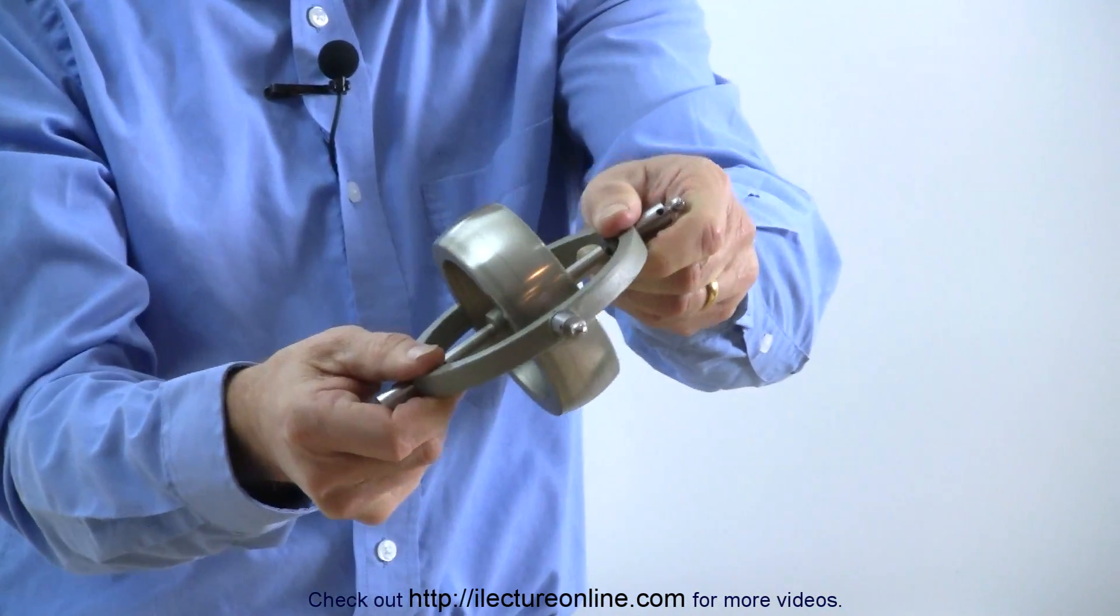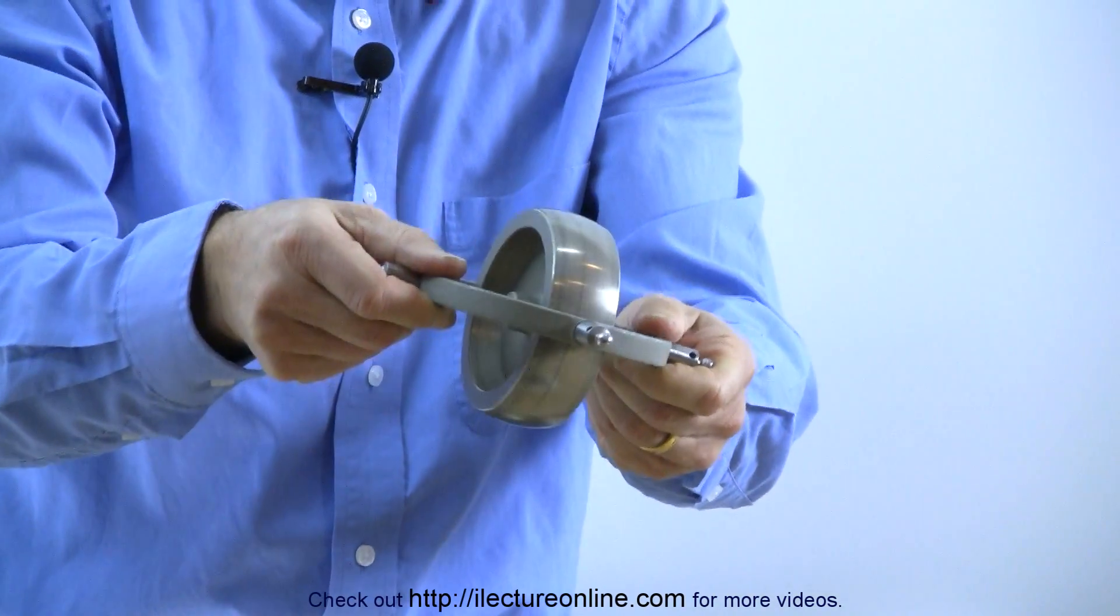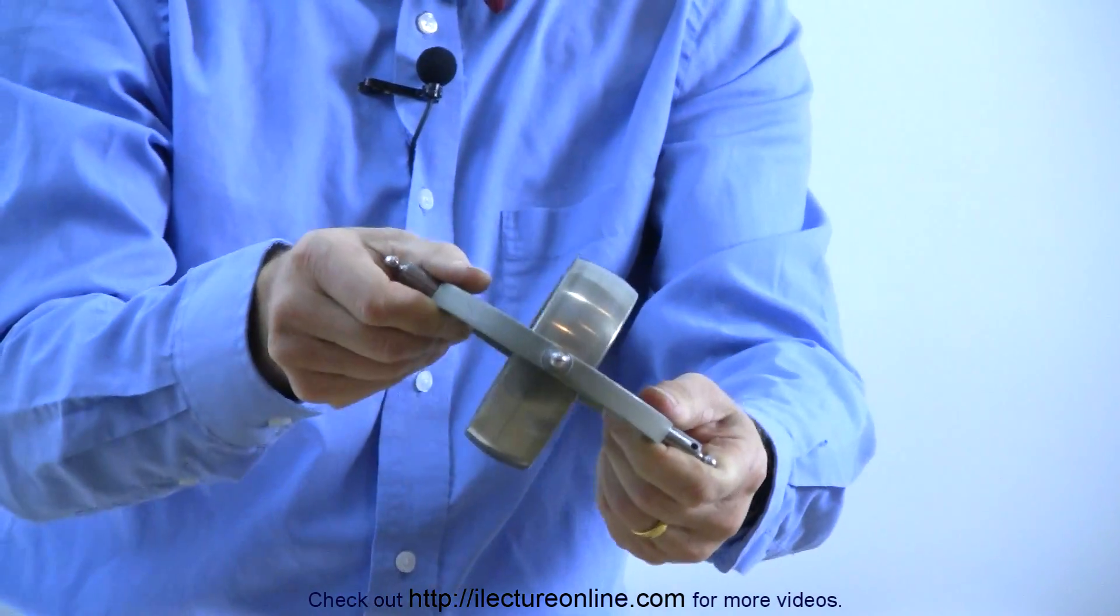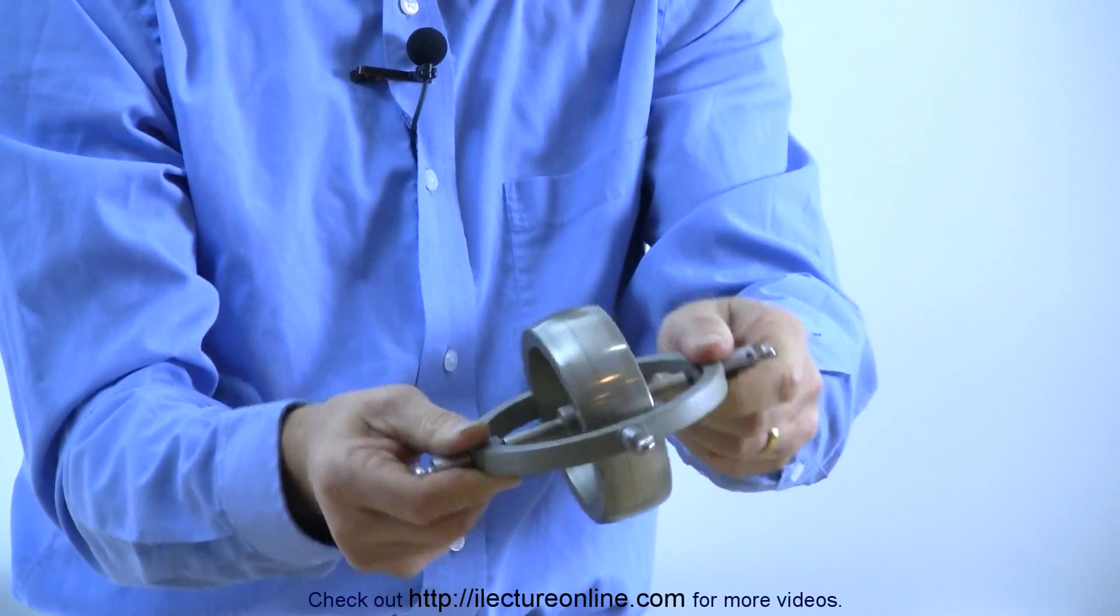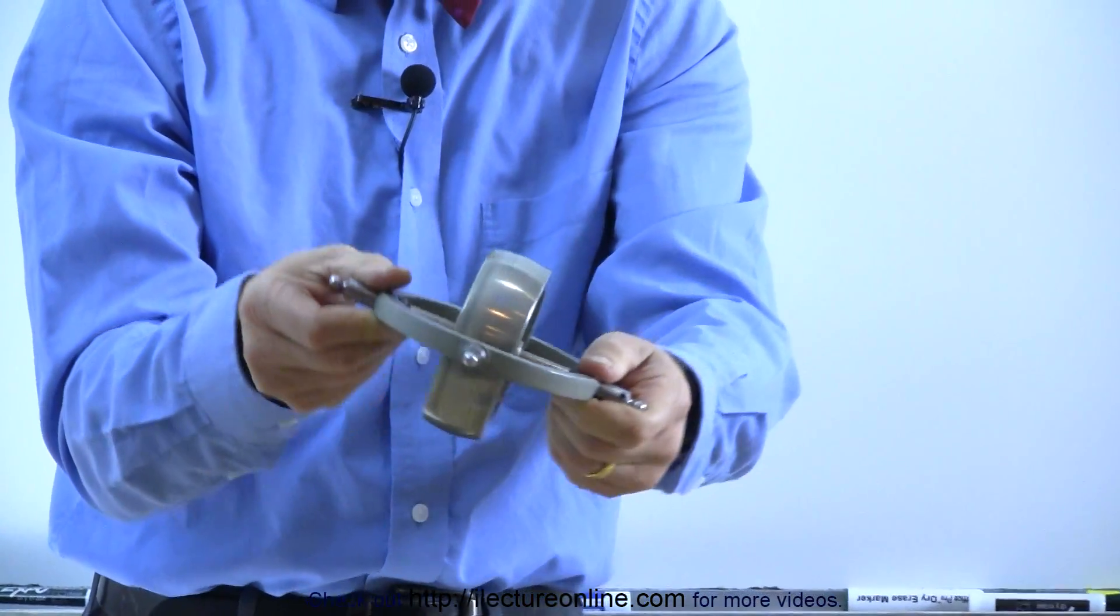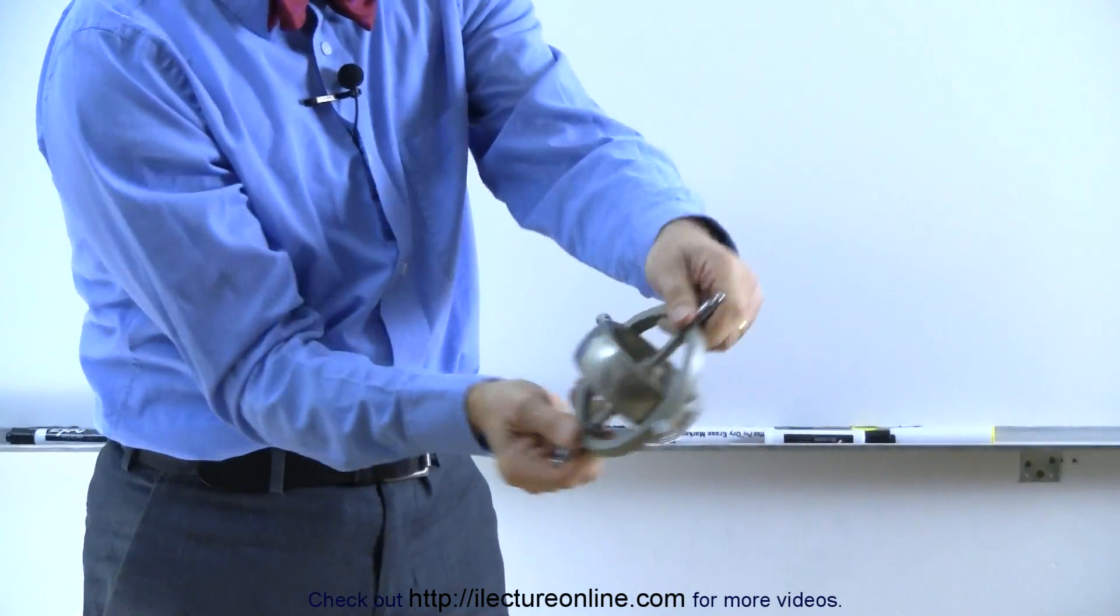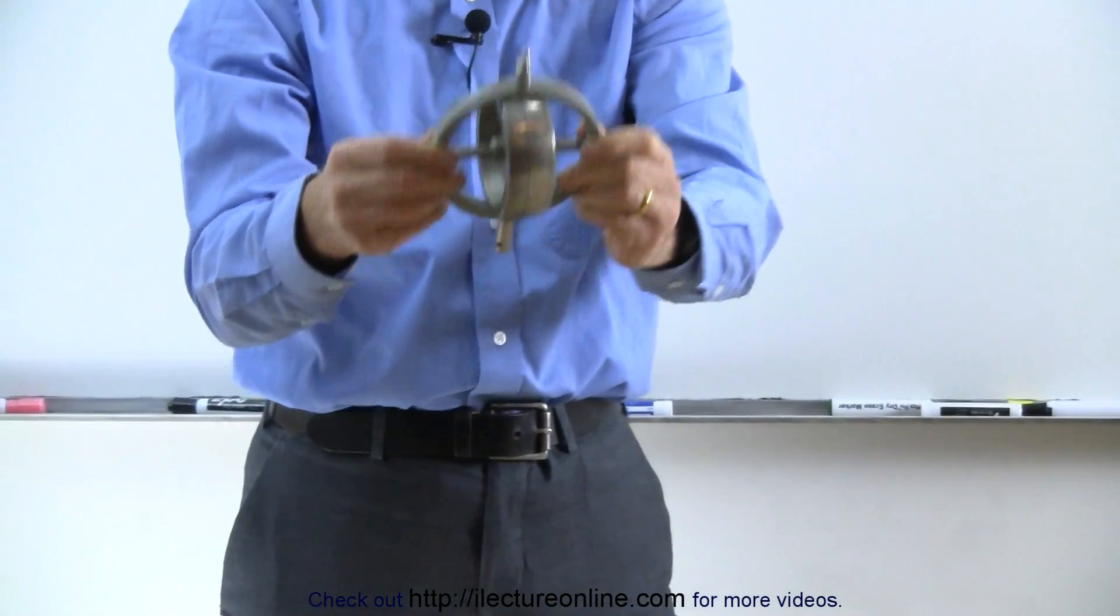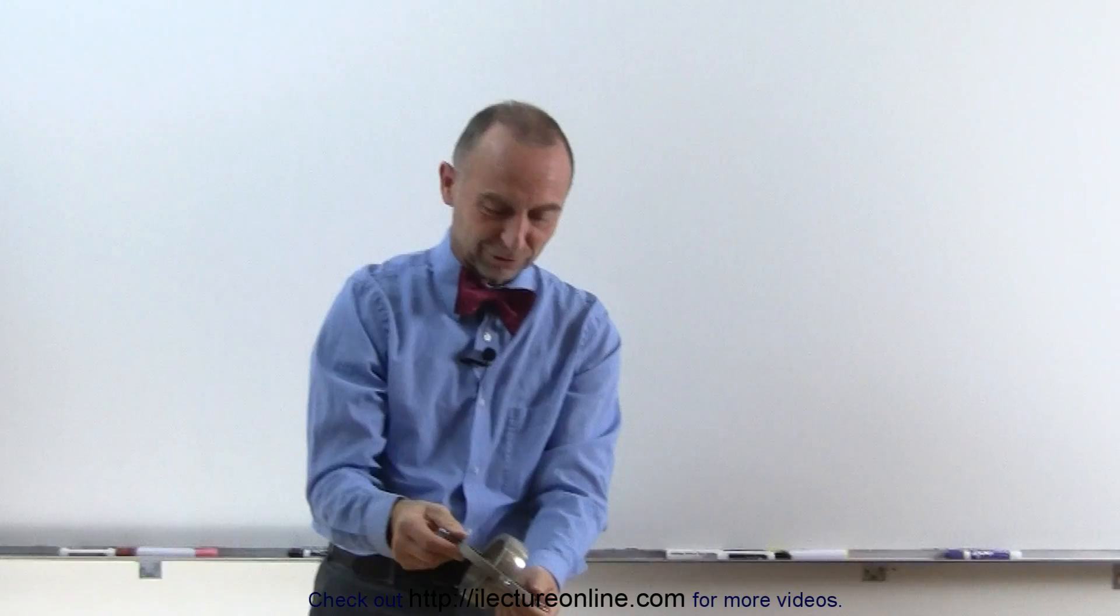So anytime I make a sudden change like that, I feel a very strong force because what I'm trying to do here is change the angular momentum. When you do that, you need a force or a torque to do that. Unfortunately, you can't feel that. If you ever have a chance to grab one of these things and kind of play with it, it's really strange how these seemingly unworldly forces act on you as you try to turn the gyroscope around like that. That's a nice illustration of what a gyroscope can do and how a gyroscope works.